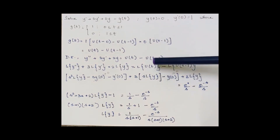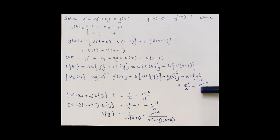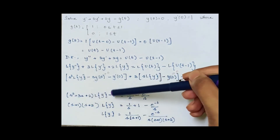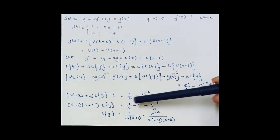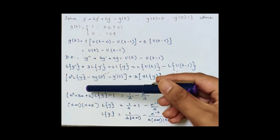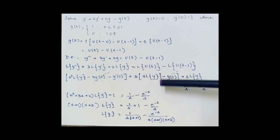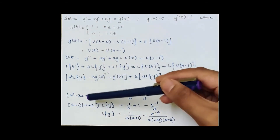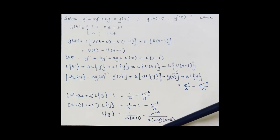With a = 0 for the first term and a = 1 for the second, the right side is 1/s − e^(−s)/s. Substituting y(0) = 0 and y'(0) = 1, and collecting all L{y} terms: (s² + 3s + 2)·L{y} − 1 = 1/s − e^(−s)/s. Factoring gives (s+1)(s+2)·L{y} = 1/s + 1 − e^(−s)/s, so L{y} = 1/[s(s+1)(s+2)] − e^(−s)/[s(s+1)(s+2)].